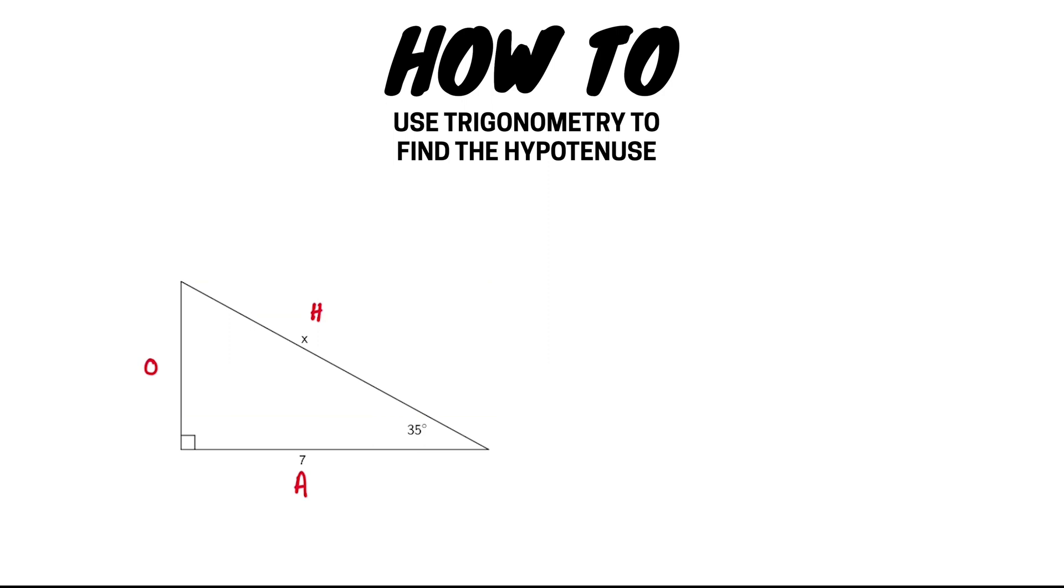We then need to highlight which sides have information on them. So in this example we have the hypotenuse side and the adjacent side. This helps us determine which trig ratio we are going to use. Because we have information on our adjacent and our hypotenuse sides, this means that we are going to be using our cos ratio.